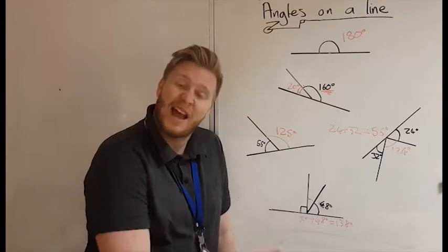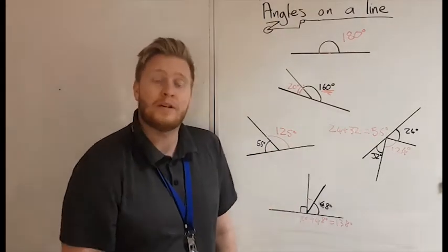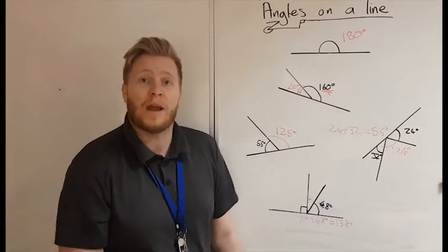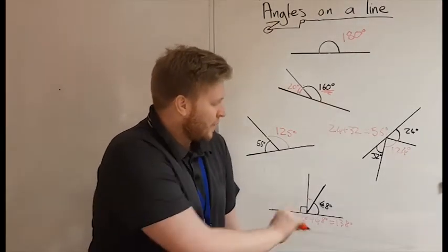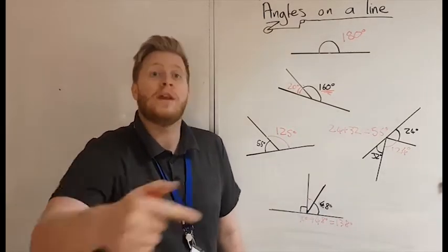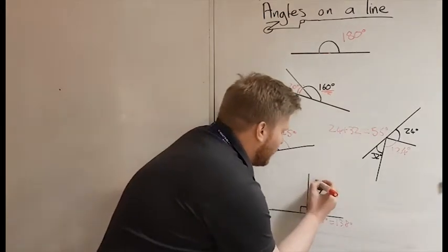This one I'm going to count on. If you notice what I've done: if I've got a large number here, I'll count on. If I've got a smaller number like 55 or 56, I'm going to take it off, just because I'll find that quicker. Whichever way is best for you, that's fine. So 138: 2 to 140, and another 40 to 180. So that must mean that this angle is 42 degrees.